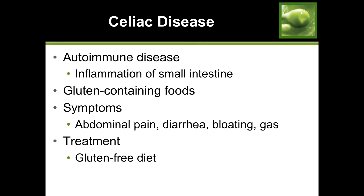Celiac disease is an autoimmune disease - when your immune system attacks your own body. It causes inflammation of the small intestine. Many people with celiac disease have allergies or sensitivities to gluten, so they follow gluten-free diets. Symptoms include abdominal pain, diarrhea, bloating, and gas. Treatment is a gluten-free diet or eliminating other triggers.